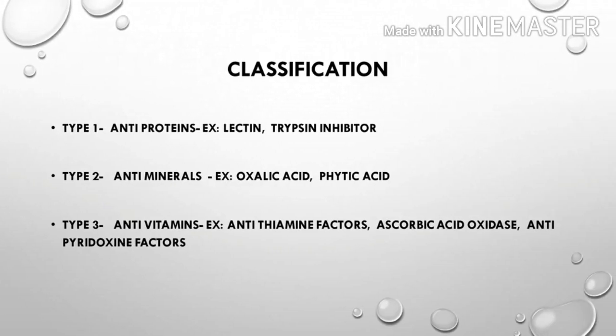Classification. We divide these anti-nutritional factors into categories. The first one is anti-proteins — these are particular proteins that prevent digestion. For example, lectin and trypsin inhibitor are anti-proteins and anti-nutritional factors.